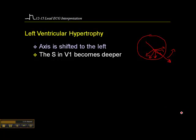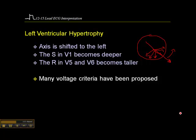The S in V1, the downward deflection, becomes deeper and the R in V5 and V6 becomes taller. Many voltage criteria have been proposed to diagnose left ventricular hypertrophy. The 12-lead ECG is not absolutely diagnostic of hypertrophy. It provides supportive evidence.